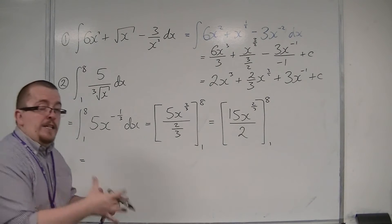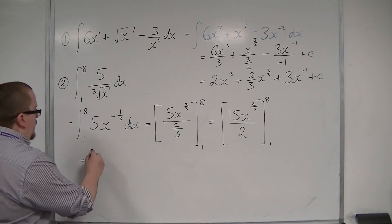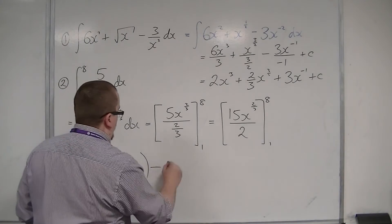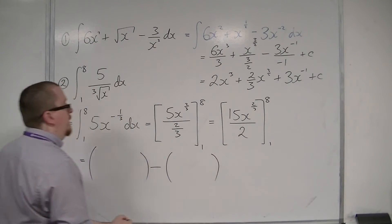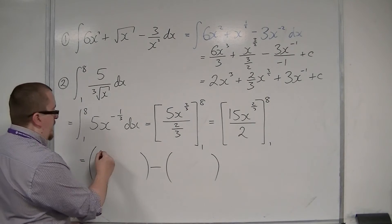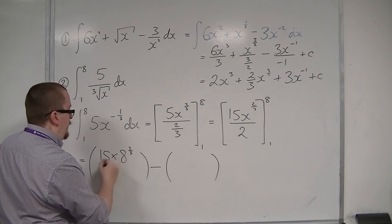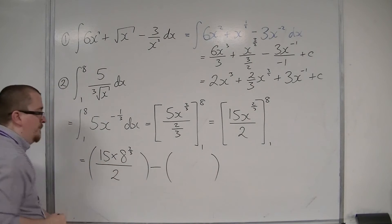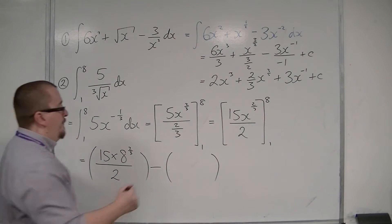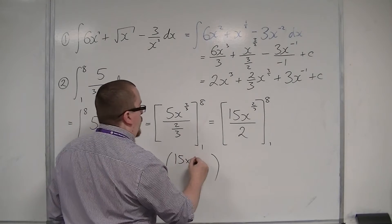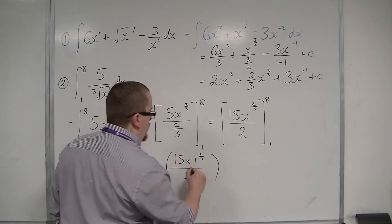So I'm going to substitute in 8 first and then 1. Open two sets of brackets. Substituting in 8, I have 15 times 8 to the power of 2 thirds divided by 2. And I have 15 times 1 to the power of 2 thirds divided by 2.